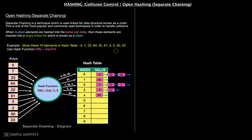Let's see what is separate chaining. Separate chaining is a technique which uses a linked list data structure, also known as a chain — hence the term chaining. It's one of the most popular and commonly used techniques to handle collisions. When multiple elements are hashed into the same slot, which is nothing but a collision, these elements are inserted into singly linked list structures which are known as a chain. It is not necessary that they are arranged in a singly linked list pattern only — there are different ways of implementation.